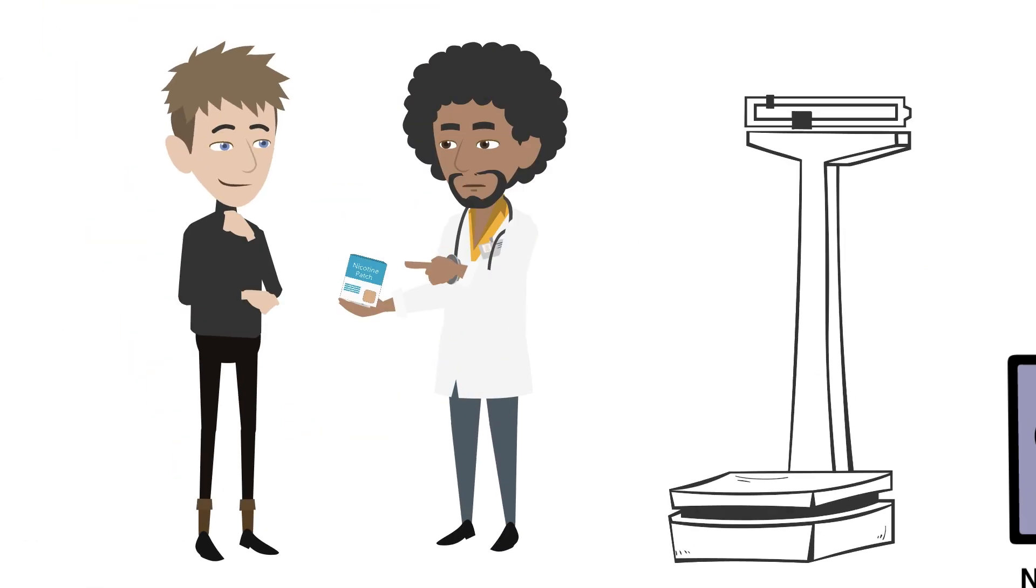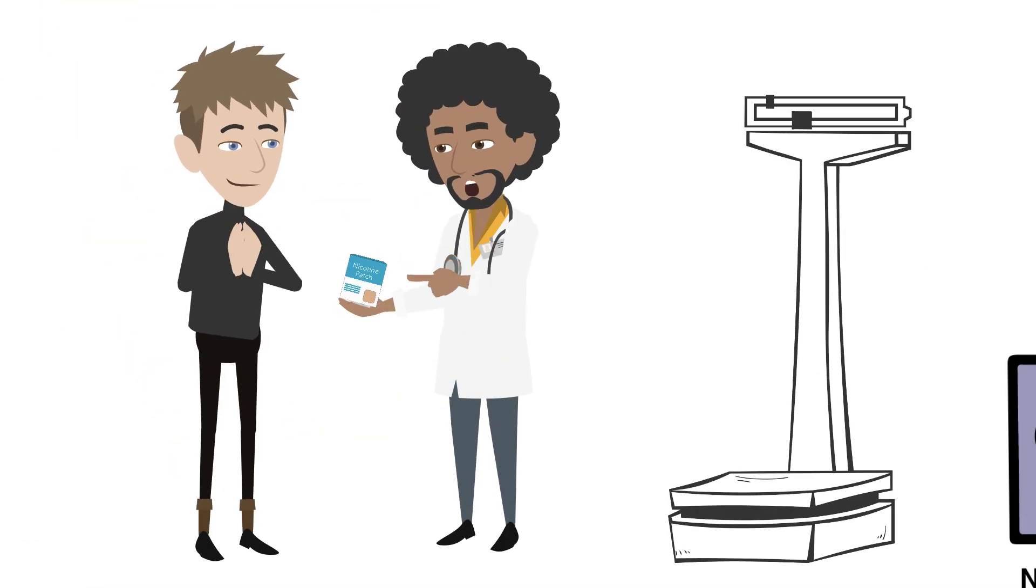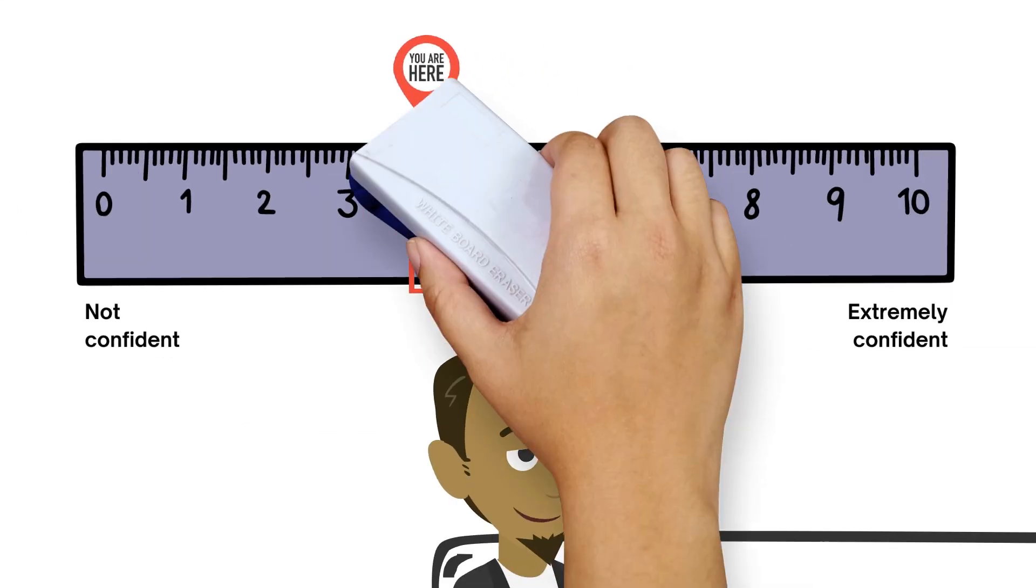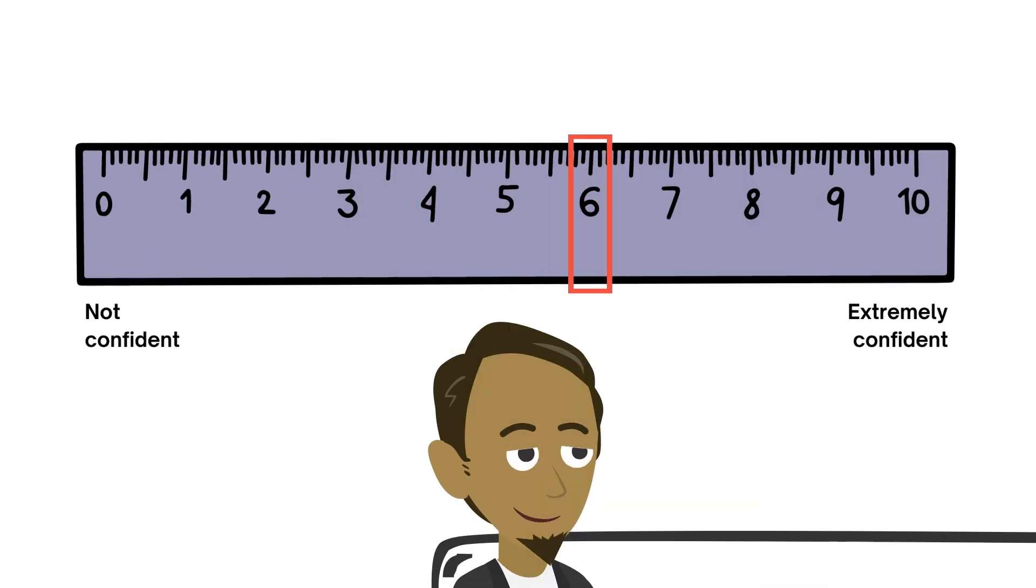His friend tells him that he used over-the-counter medications to help him manage his symptoms. Lucas decides to take a similar approach, boosting his confidence to a 6.